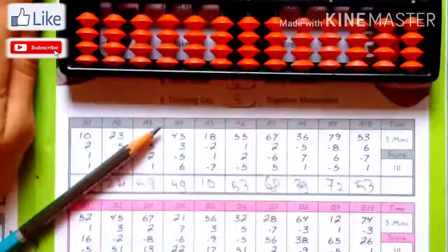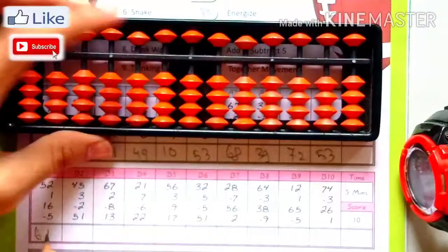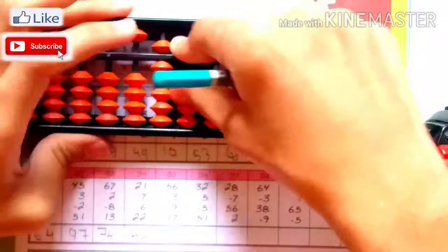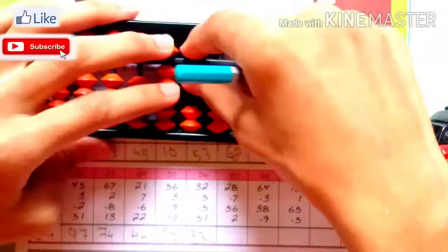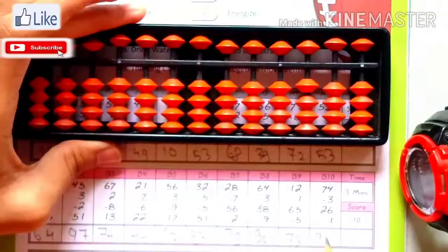We are going to start our quiz. 1, 2, 3, start. 52, plus 1, 60, minus 5, 64, 45, 43, minus 2, 61, 97, 67, plus 2, minus 8, plus 1, 74, 21, 7, minus 6, plus 2, 34, 56, 3, minus 9, plus 17, 67, 32, plus 5, minus 5, 53, 28, minus 7, plus 5, plus 2, 79, 64, minus 3, plus 3, minus 9, 90, 12, 65, minus 5, 73, 74, minus 3, 26, plus 1, 98, 60, minus 8, plus 2, minus 8.